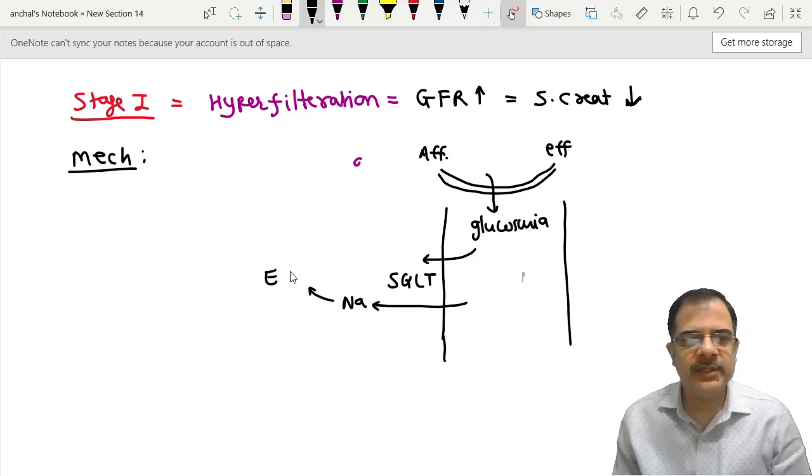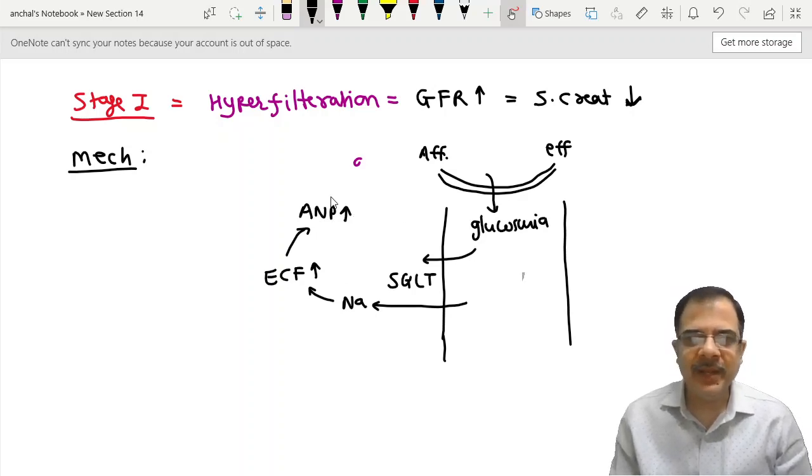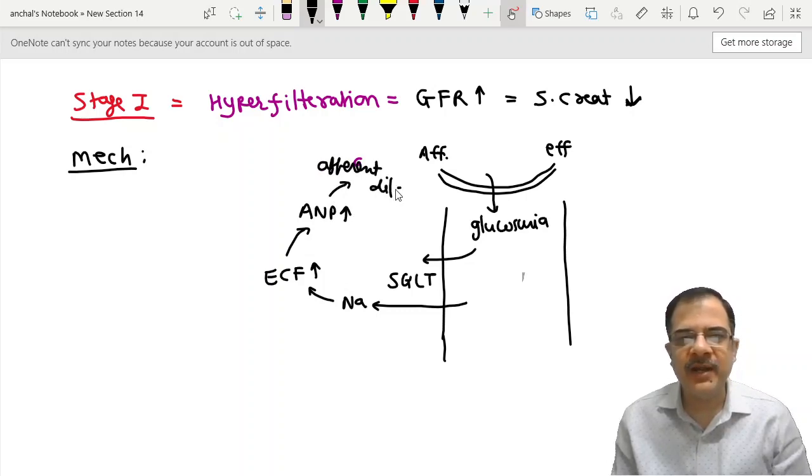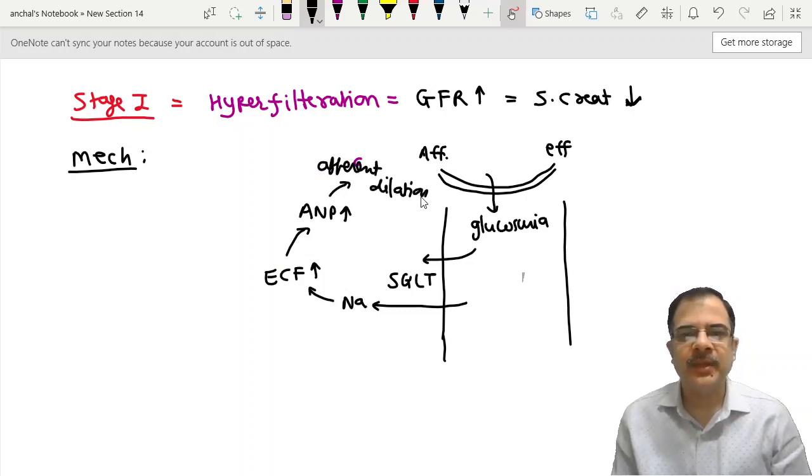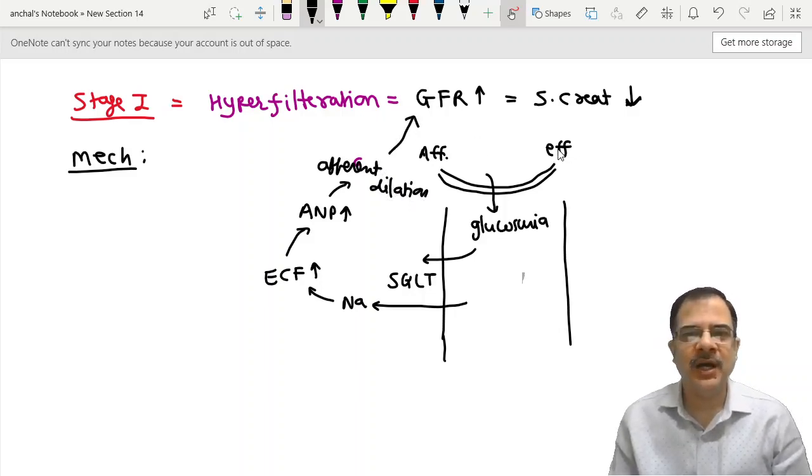It will of course lead to ECF volume high. And if ECF volume is high, atria stretch. And when atria stretch, ANP is released. And ANP leads to afferent arteriole dilation. So when the afferent arteriole dilates, GFR increases.